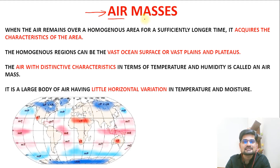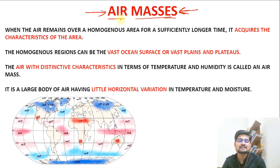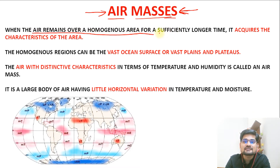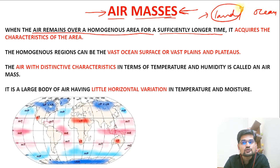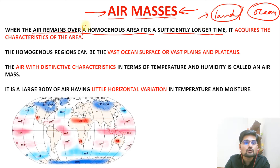What are these air masses? Remember we talked about something air-mass related in the monsoon as well — the concept of air mass theory. So let's understand how these air masses become important. When the air remains over a homogeneous area for a sufficiently longer time — now remember, this has to do with the land area or ocean area. The area has to be specified. So it has to be a homogeneous area.